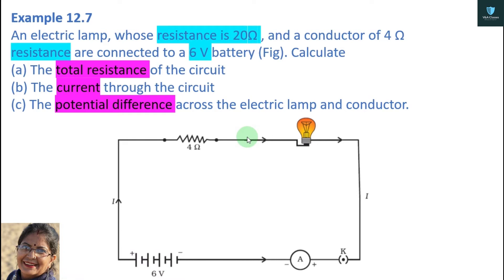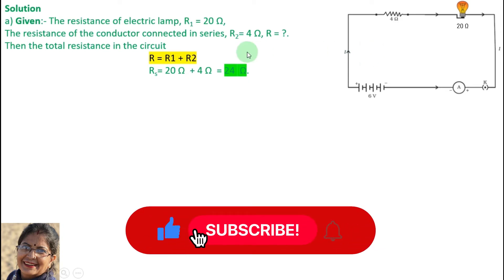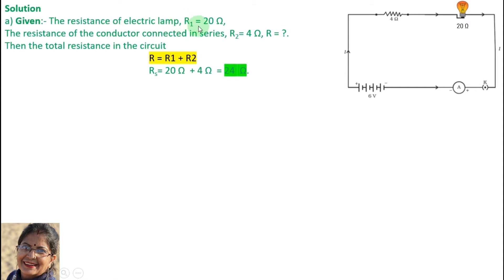Let's take the first part: total resistance. R equals R1 plus R2. We write R1 value and R2 value here. Adding both gives us 24 ohms. That is the first part.